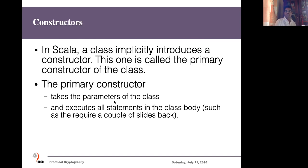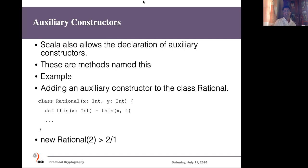As mentioned, in Scala the constructor definition is implicit. Scala classes implicitly define a constructor — this is called the primary constructor of the class. The primary constructor takes the parameters of the class and executes all statements in the class body using those parameters for initialization. We can also define auxiliary constructors in addition to the primary constructor. Let's see how to define auxiliary constructors.